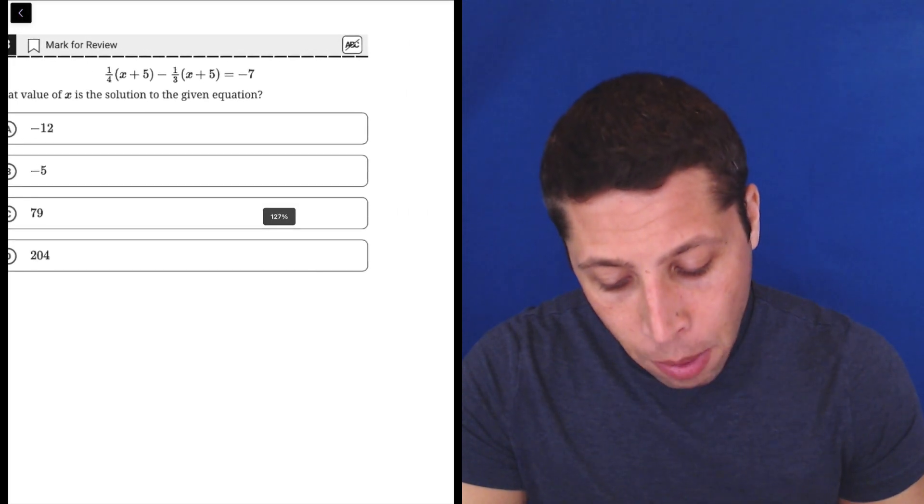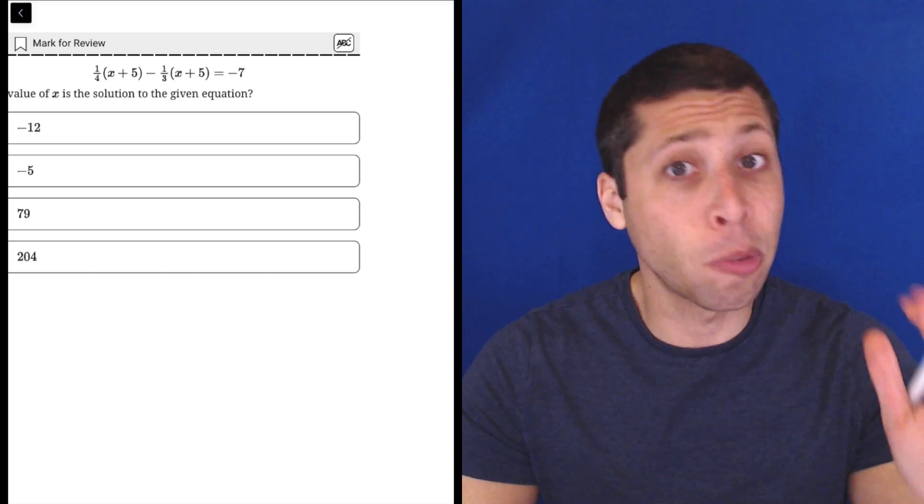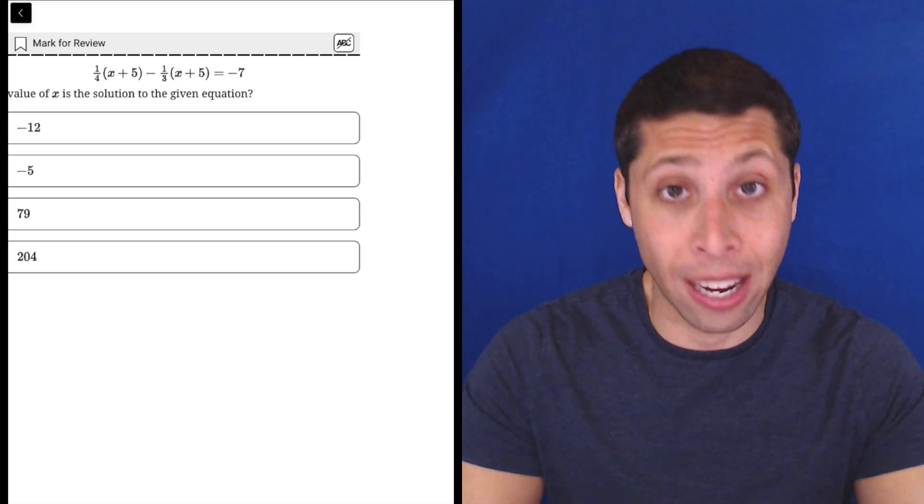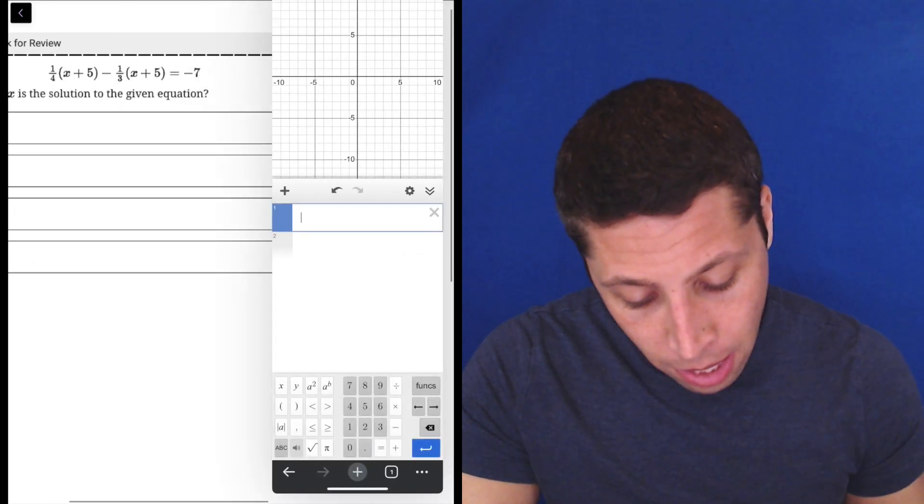This equation, it only has one variable. I know there's two Xs, but for algebra purposes, there's only one variable. There's just an X. There's no Y. We can enter this into Desmos. Let's do that and see what we get.